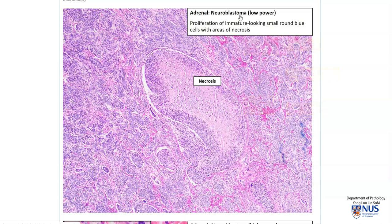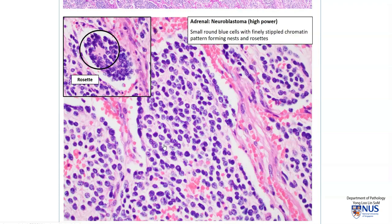These blast cells are called neuroblasts. On microscopy, we can see that this is a very necrotic tumor, which usually represents rapidly growing tumors. Moving to other areas, the cells are small and round — this is a classical example of a small round blue cell tumor. In some areas there is also rosette formation, which is quite classical in neuroblastoma.